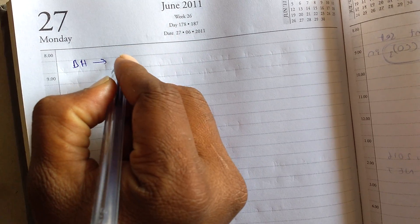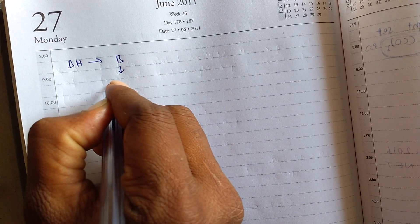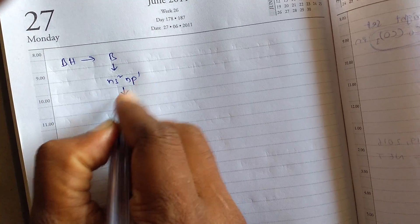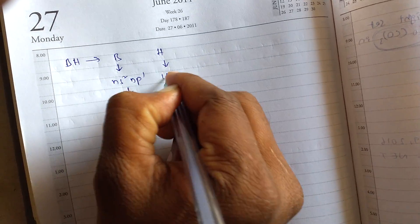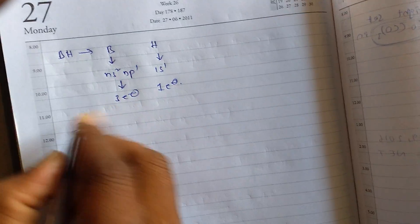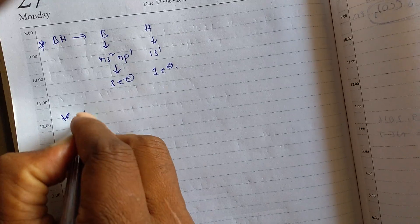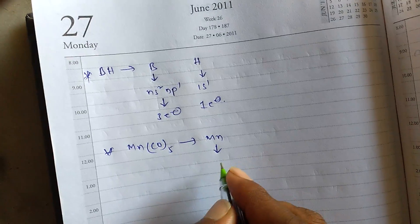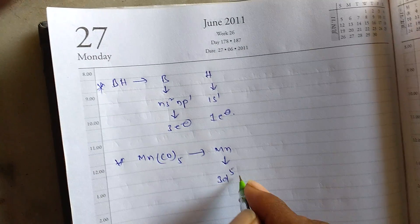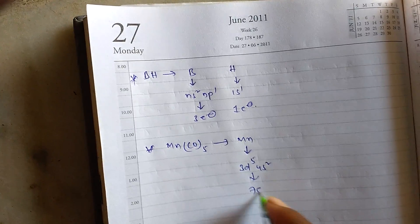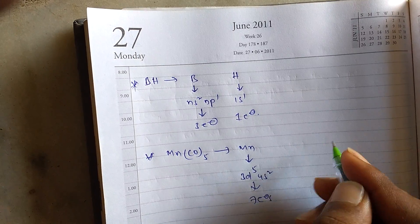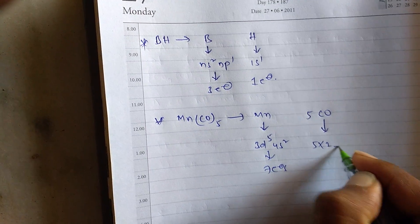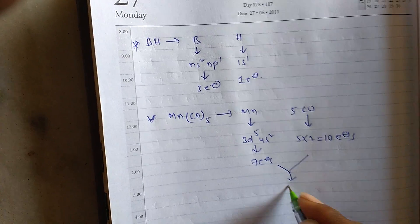Next, for BH: boron has electronic configuration NS²NP¹, that means it has 3 outer electrons, and hydrogen has 1s¹, giving 1 outer electron. So BH has 4 electrons total. Next, Mn(CO)₅: manganese has 3d⁵4s² outer electronic configuration, that means it has 7 electrons, and it has 5 CO ligands — each CO gives 2 electrons, so 5×2 = 10 electrons. Total: 17 electrons for Mn(CO)₅.